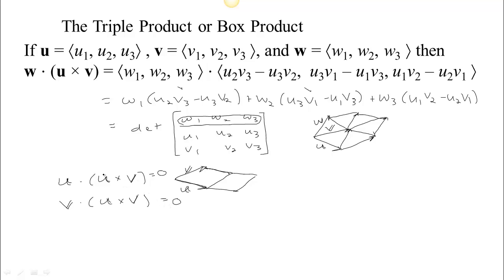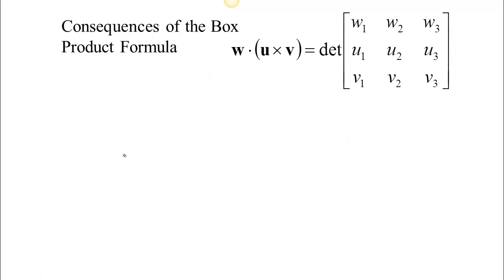So that means the cross product u cross v is perpendicular to u, because the dot product with u is zero, and u cross v is also perpendicular to v, because the dot product of u cross v with v is zero. There's another consequence of this triple product, or box product, for the cross product.